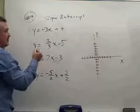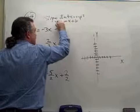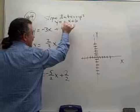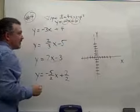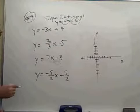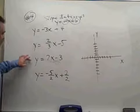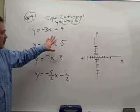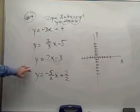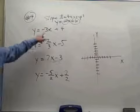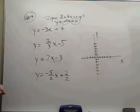Remember, the generic version of slope-intercept form is y equals mx plus b, where m is the slope and whatever that constant b is, is the y-intercept. I know each equation is in this form because on one side I have y alone with a coefficient of positive one.